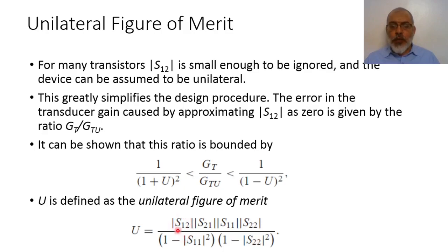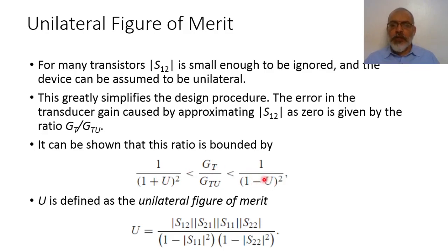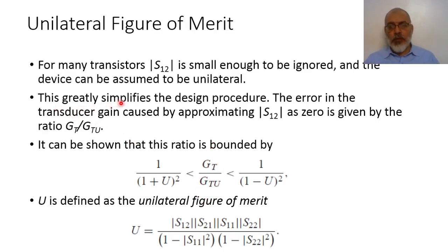In the case where S12 is very small, the unilateral figure of merit U is also very small. So 1/(1+U) is nearly 1, and 1/(1−U) is nearly 1. Therefore, the transducer gain is approximately equal to the unilateral transducer gain. This greatly simplifies the design procedure, and the error in the transducer gain caused by approximating S12 as zero is given by the ratio G_T over G_TU, expressed in terms of the unilateral figure of merit.